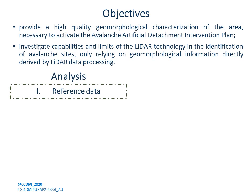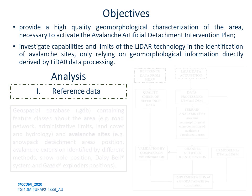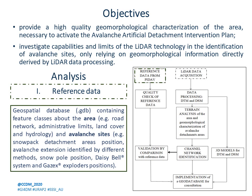The performed analysis regarded a series of basic cartographic data contained within the intervention plan. Specifically, a geodatabase containing feature classes was adopted. Contained information is relative to general information about the area, such as road network, administrative limits, land cover and hydrology, and to more specific information regarding avalanche sites, such as snowpack detachment area positions, avalanche extensions identified by different methods, snow pole positions, artificial detachment system positions, etc. All these data were used as reference data, managed in a GIS environment, and used to validate the other data derived from LiDAR data processing.